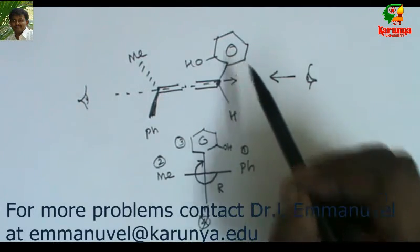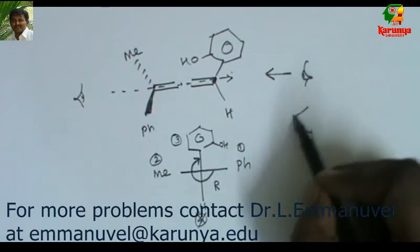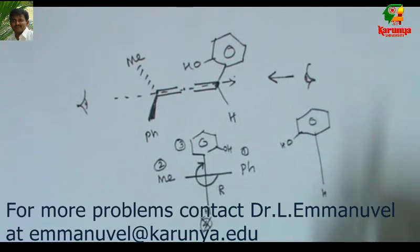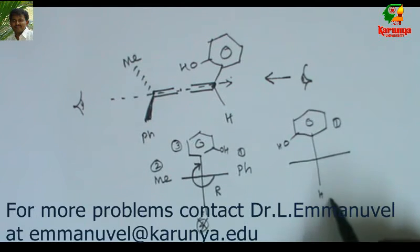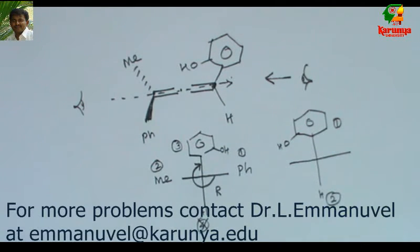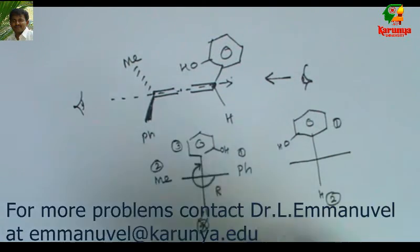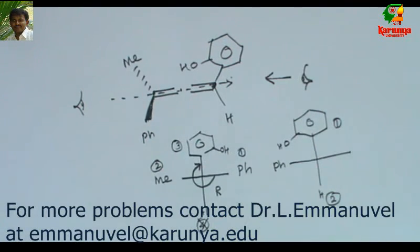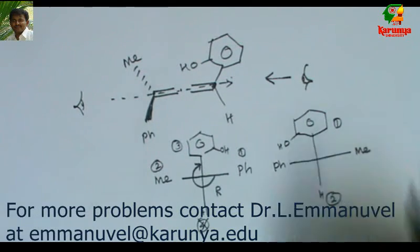The hydroxyphenyl group will be on the top and hydrogen will be at the bottom. So I write the two groups here — this gets higher priority, then the other gets lower priority: one and two. Then I go further. Towards my left I will see phenyl; towards my right I will see methyl.